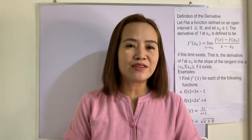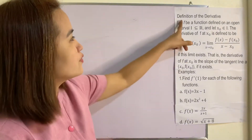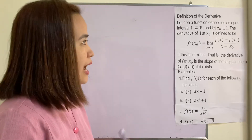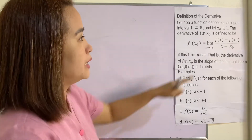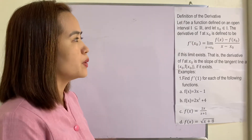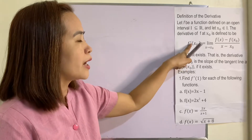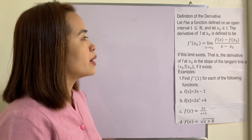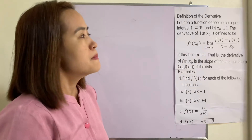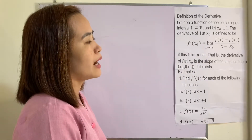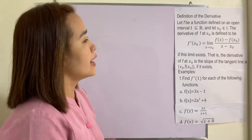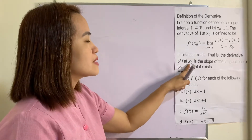Let's do it. The definition of the derivative: Let f be a function defined on an open interval I, and let x sub zero be an element of the open interval. The derivative of f at x sub zero is defined to be f prime. f prime of x sub zero is equal to the limit of f of x minus f of x sub zero over x minus x sub zero as x approaches x sub zero, if this limit exists.